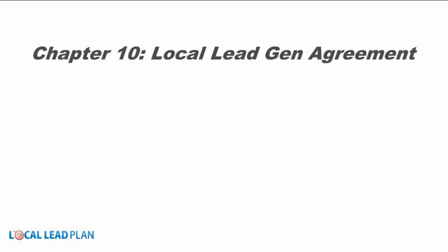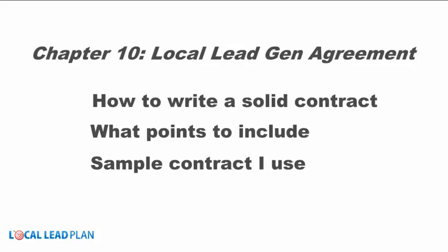Chapter ten is about the all-important local lead generation agreement. This is how you write a contract that's going to protect both you and your client from any problems down the road. I go over a sample contract that I've used in my own business and give you examples of what to do and what not to do. You should never start working without one of these contracts in place, so this is a really important chapter.